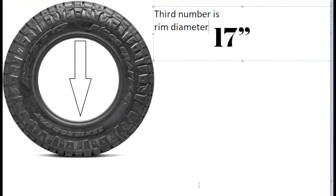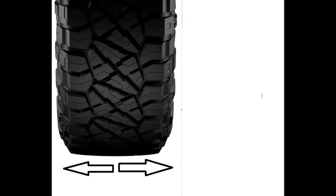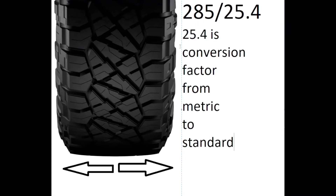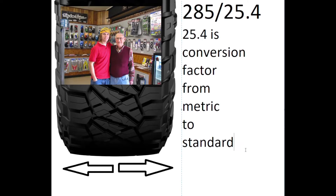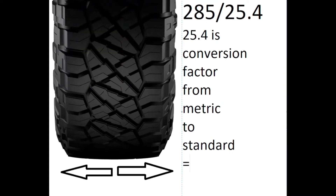So with a little math, this is pretty easy to figure out. Take the first number, 285, and divide by 25.4 — this is our metric to standard conversion factor. This gives us 11.22, so the width of the tire is 11.2 inches.